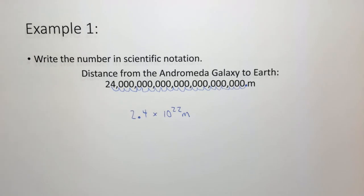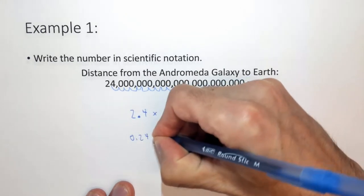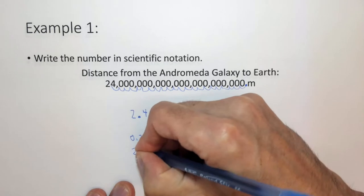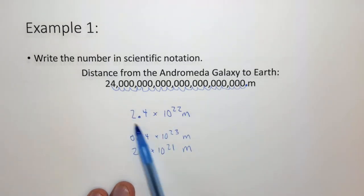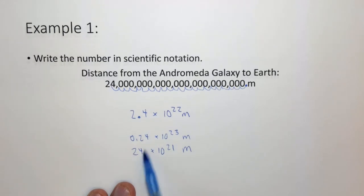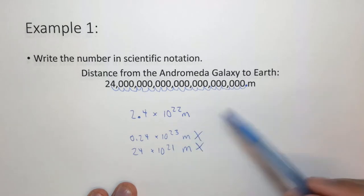We haven't talked about significant figures yet — that's in the first chapter of the general chemistry textbook — but these zeros are not significant so you don't need to write them in scientific notation. Notice that 0.24 times 10 to the 23, or 24 times 10 to the 21, are all the exact same number. However, only 2.4 times 10 to the 22 is scientific notation. The coefficient must be between 1 and 9.99999; if it's not, it is not scientific notation even though it's the same number.